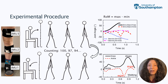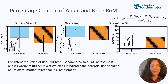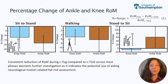Knee and ankle angles were calculated by integrating gyroscopic data. Typical knee and ankle angles versus time are shown here. Range of motion was calculated using the difference between maximum and minimum joint angles. Percentage change between TUG and C-TUG tests was calculated using equation 1 at the top right of the slide.